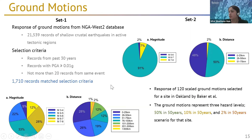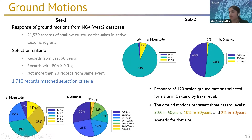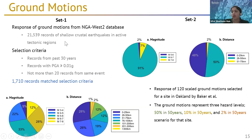For a second set, we used 120 scaled ground motions selected for a site in Oakland, used by Professor Baker in his study. These represent three hazard levels: 50% in 50 years, 10% in 50 years, and 2% in 50 years. Compared to Set 1, Set 2 has higher magnitudes and shorter distances. The idea of using two sets was to see whether an algorithm trained on one set can be applied to a completely different distribution.